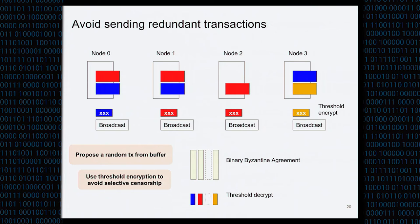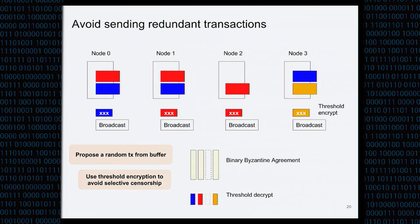To overcome this, we introduce threshold encryption. There is a threshold encryption public key shared by the whole group. At the beginning of its broadcast, each node picks a random set of transactions, encrypts them all to the group's public key, and broadcasts the ciphertext. At the end of the binary Byzantine agreement phase, what everyone agrees on is a set of ciphertexts to include. Once all binary agreement protocols finish and ciphertexts are committed, the nodes run the threshold decryption procedure together to decrypt those ciphertexts. Crucially, the adversary has no way to see which nodes proposed which transactions before commitment, preventing any selective censorship attack.